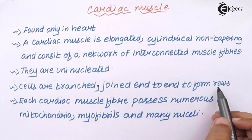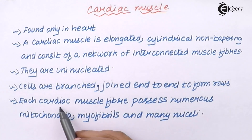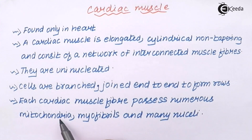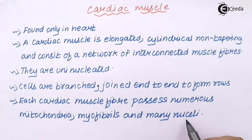Each row of cardiac muscle cells possesses numerous mitochondria, which is the powerhouse of the cell, as well as myofibrils and many nuclei structures.